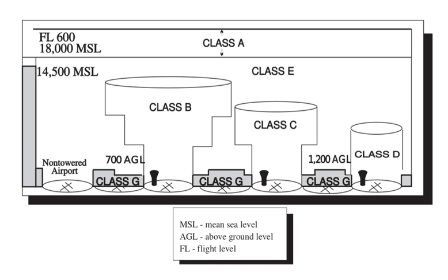Warning areas are similar in nature to restricted areas; however, the United States government does not have sole jurisdiction over the airspace. A warning area is airspace of defined dimensions, extending from 12 nm outward from the coast of the United States, containing activity that may be hazardous to non-participating aircraft. The purpose of such areas is to warn non-participating pilots of the potential danger. A warning area may be located over domestic or international waters or both. The airspace is designated with a 'W' followed by a number.